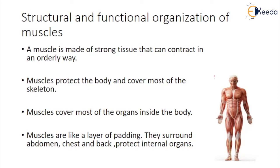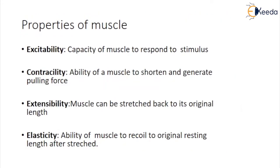Muscles are like a layer of padding. They surround the abdomen, chest, and back, and protect internal organs. Properties of muscles: Excitability — capacity of a muscle to respond to a stimulus. Contractility — ability of a muscle to shorten and generate pulling force. Extensibility — muscle can be stretched back to its original length. Elasticity — ability of a muscle to recoil to its original resting length after stretching.